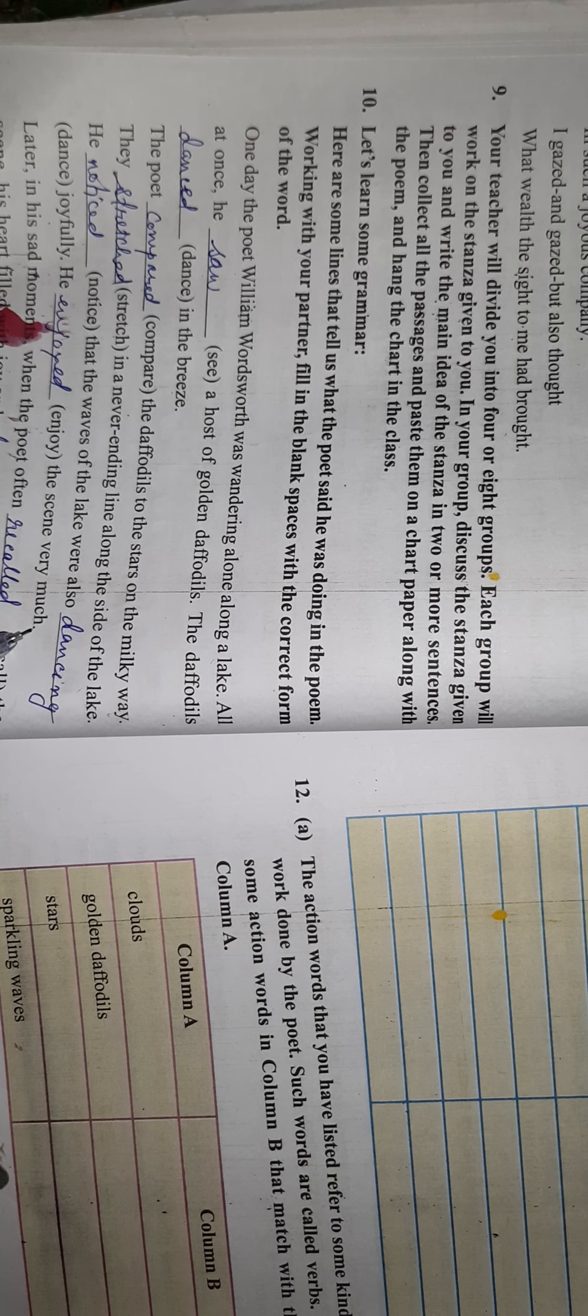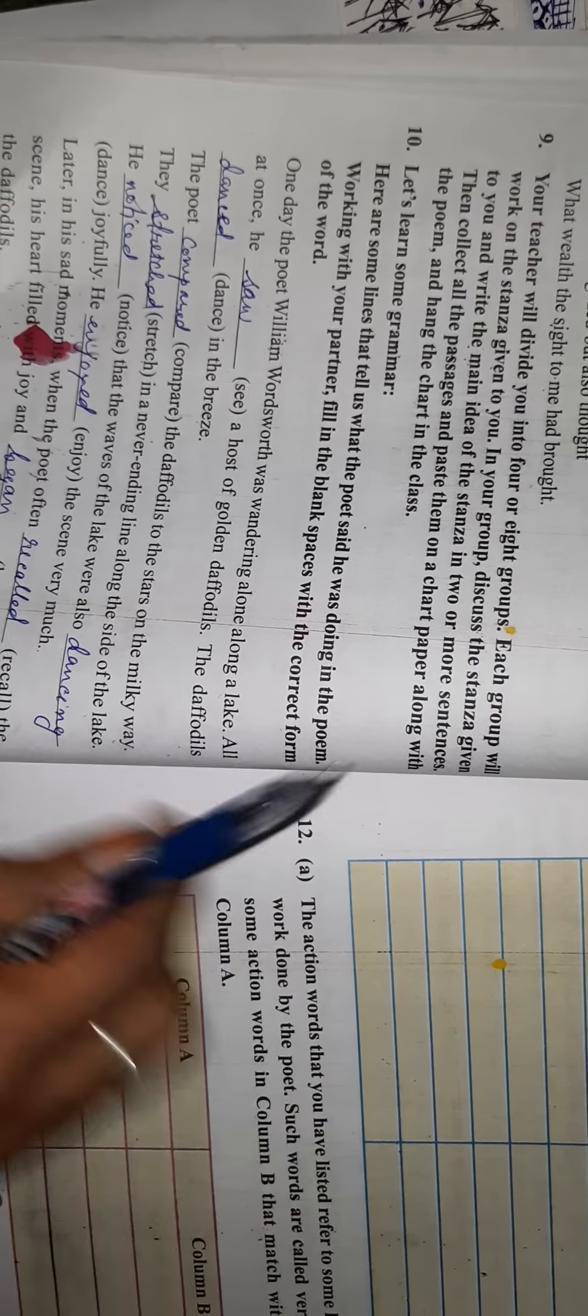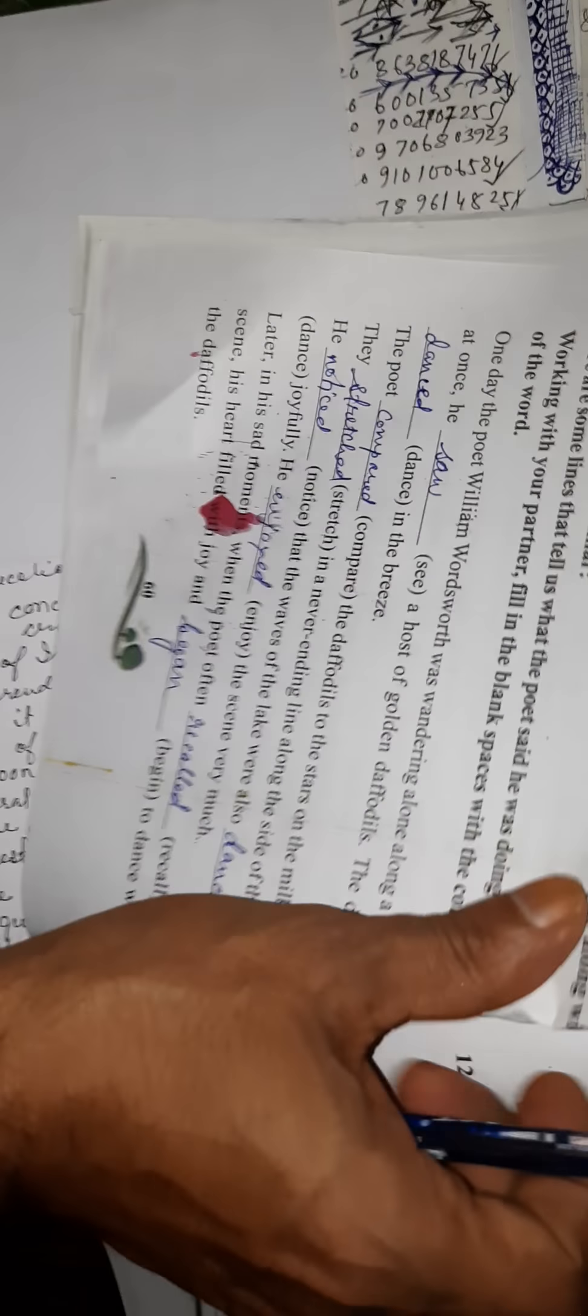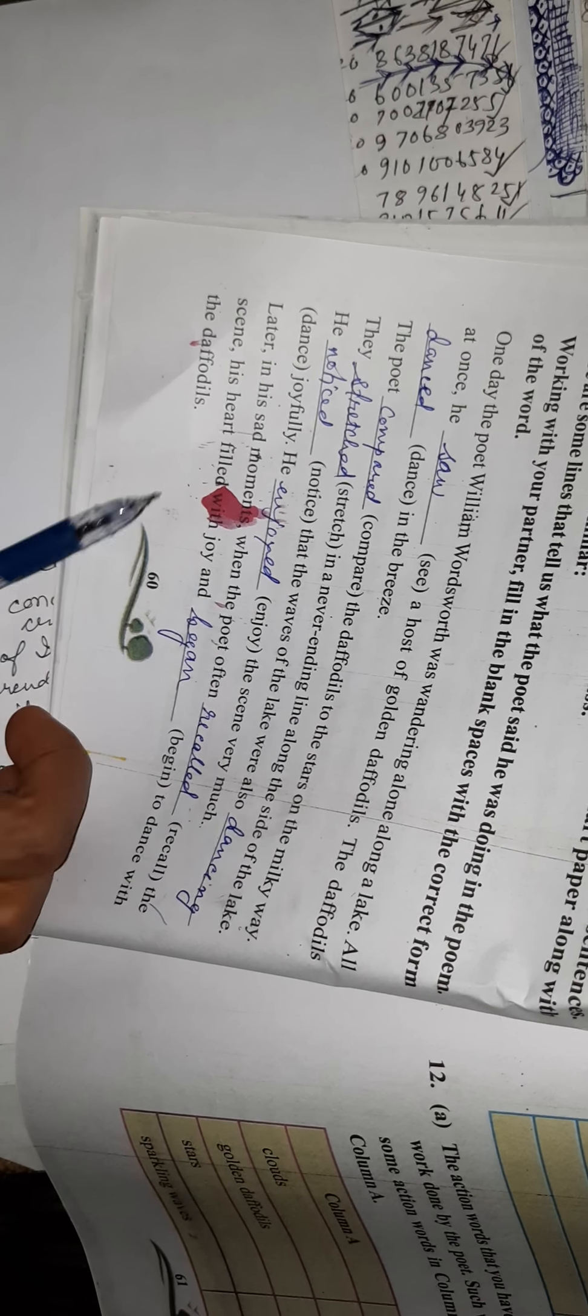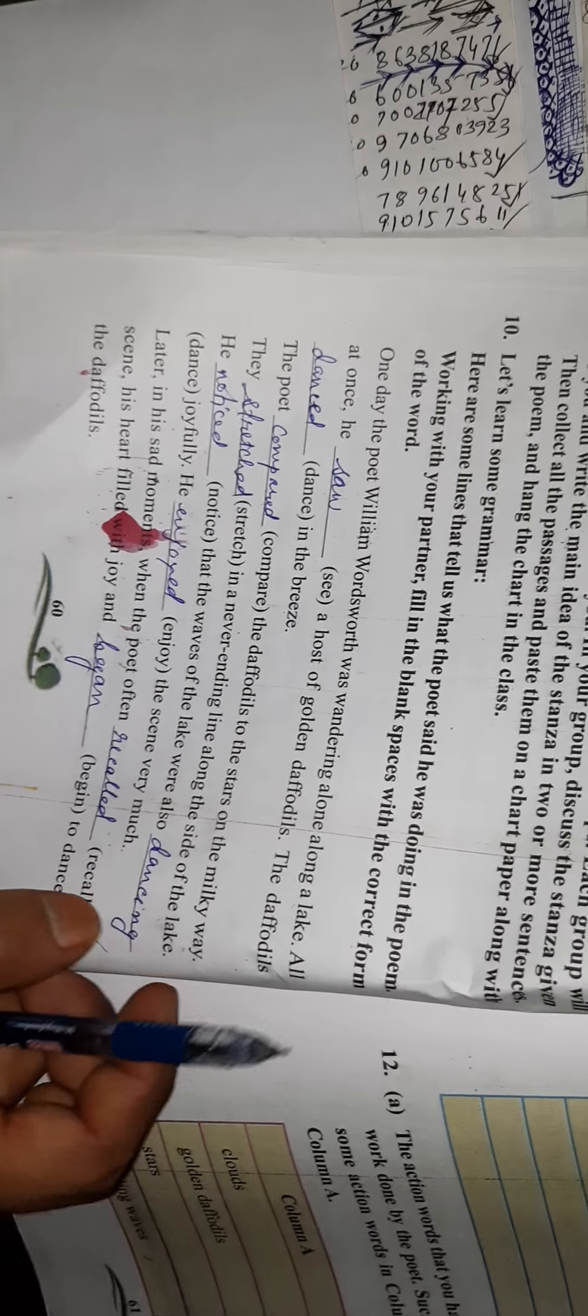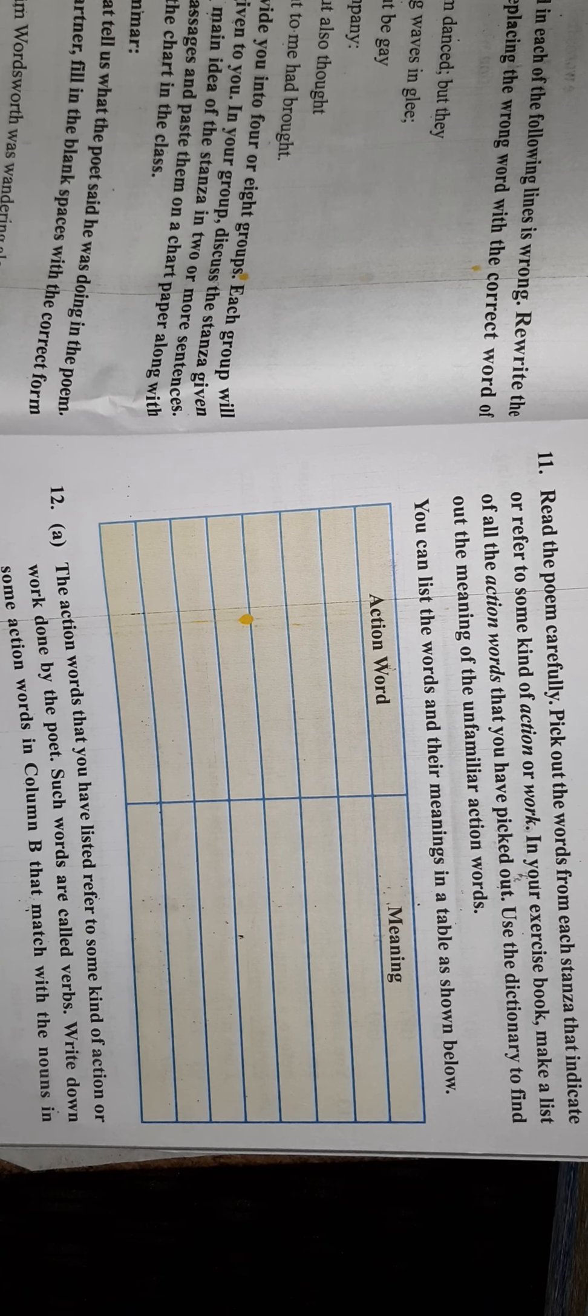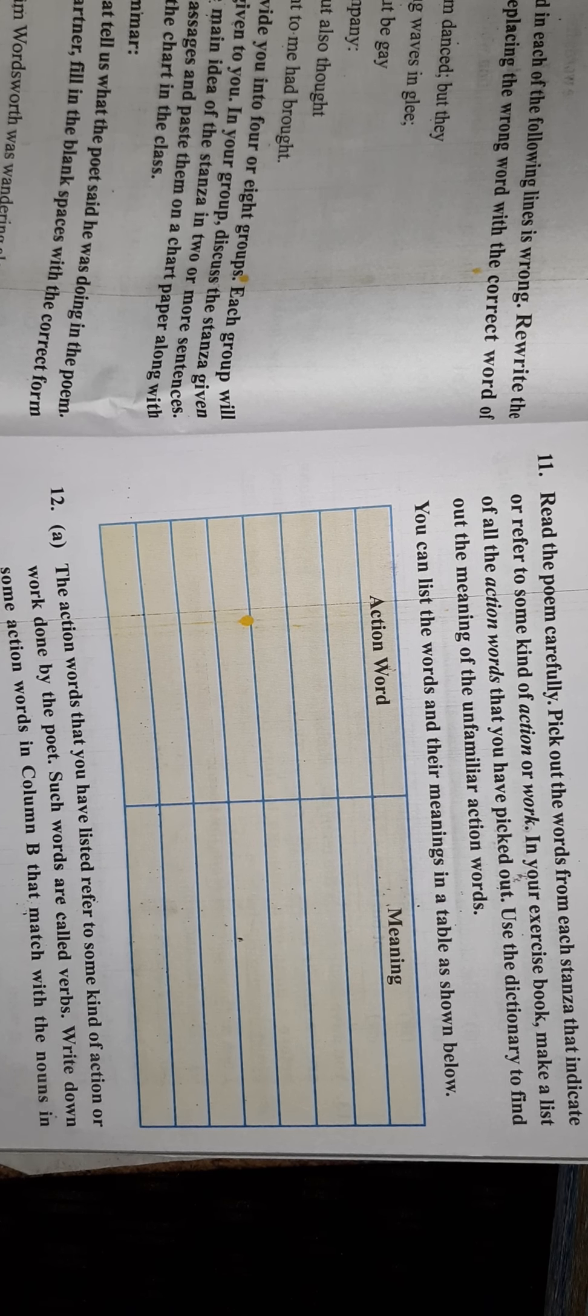He noticed that the waves of the lake were also dancing joyfully. He enjoyed the scene very much. Later, in his sad moments, the poet recalled the scene. His heart filled with joy and began to dance with the daffodils. So he had a music. So get a key say action word. Page number sixty-one.